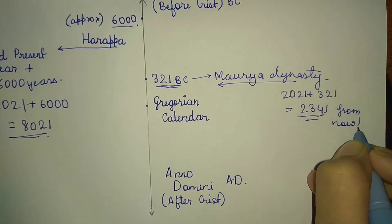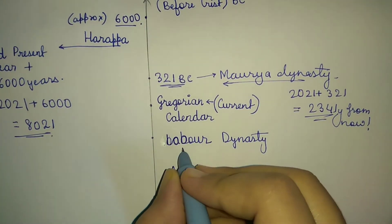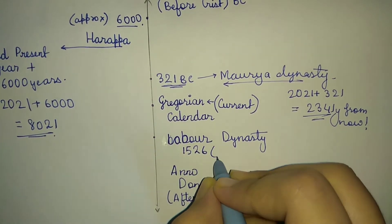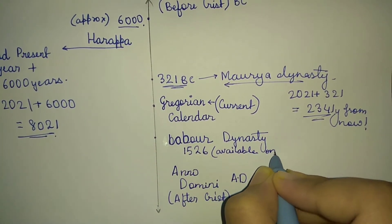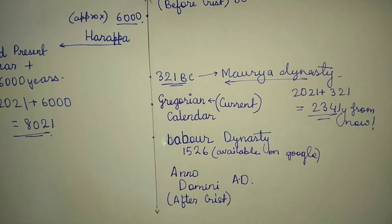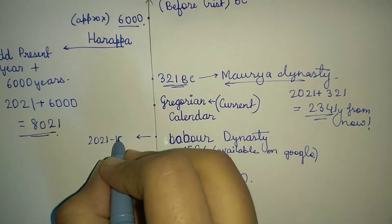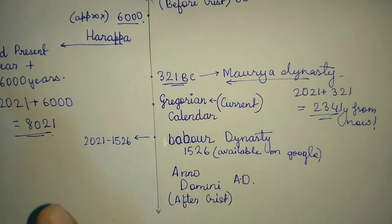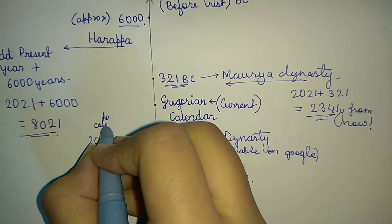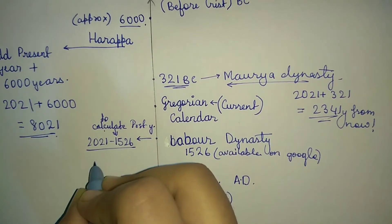Now we'll calculate After Christ (AD) years. We'll take the Babur Dynasty, which came to India in 1526. To calculate AD years, we subtract the given year from today's year: 2021 - 1526 = 495. So the Babur Dynasty came 495 years ago.